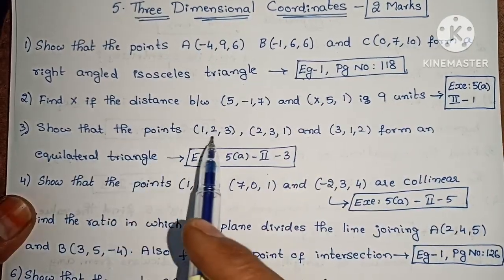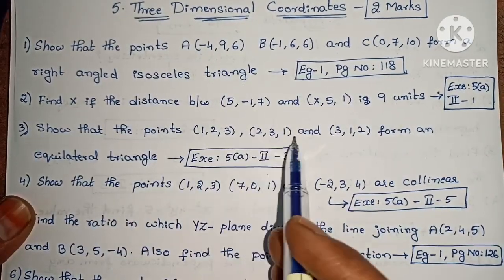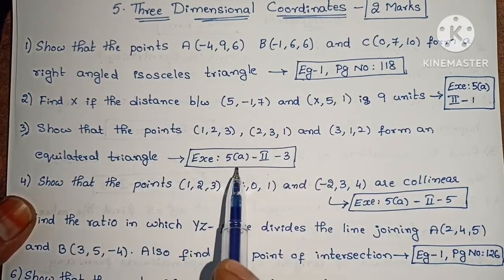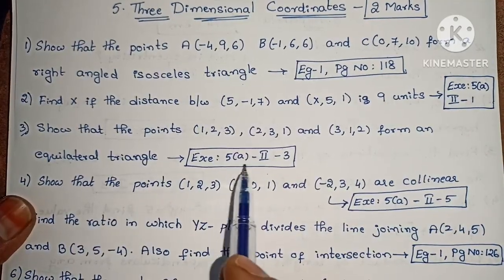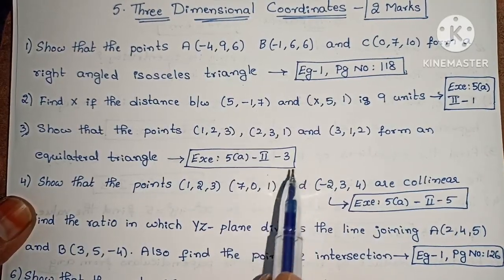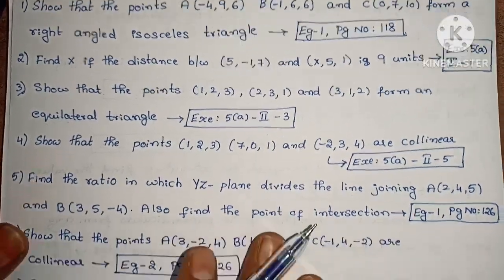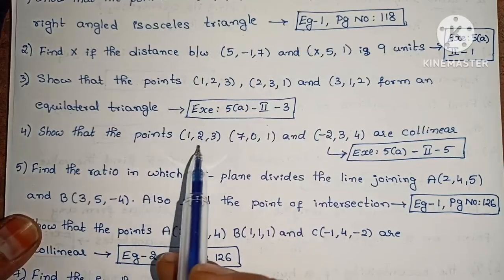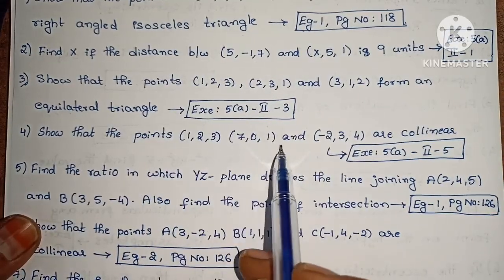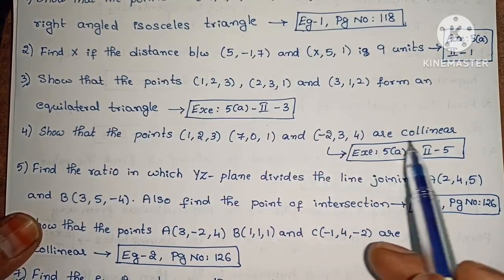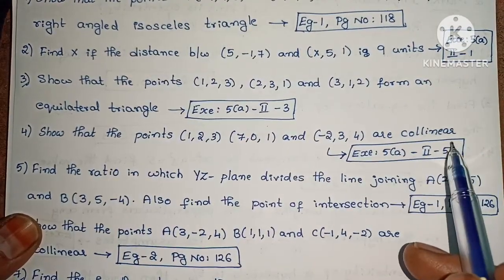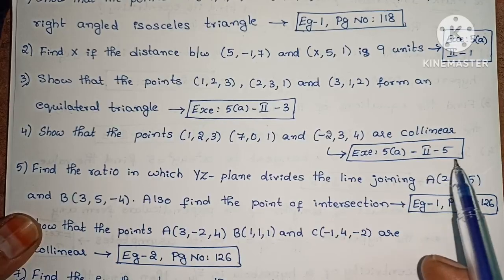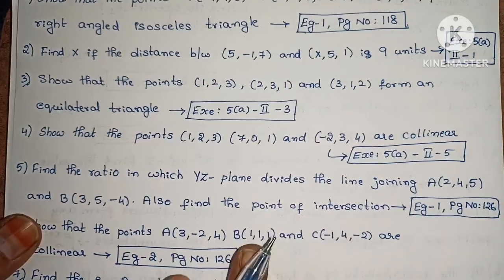Next, show that the points (1,-2,-3), (2,-3,-1) and (3,-1,-2) form an equilateral triangle — Exercise 5A, second Roman numeral, third one. Next, show that the points (1,2,3), (7,0,1) and (-2,3,4) are collinear — Exercise 5A, second Roman numeral, fifth one.